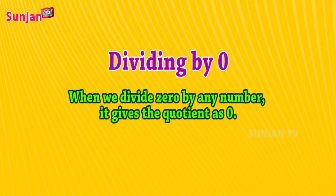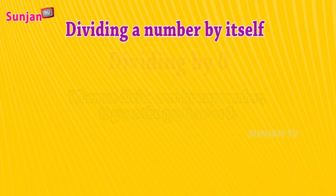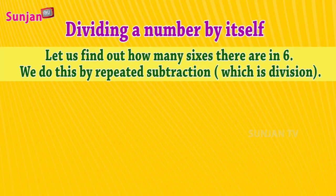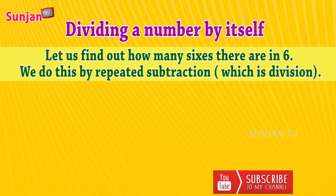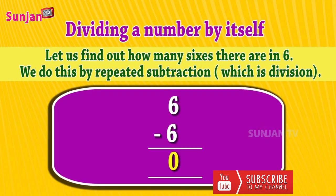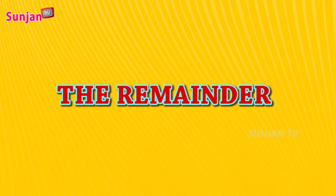Dividing by 0: When we divide 0 by any number, it gives the quotient as 0. Dividing a number by itself: Let us find out how many sixes are there in 6. We do this by repeated subtraction, which is division. 6 minus 6 equals 0.